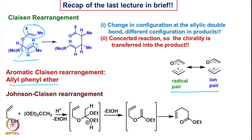Towards the end of the last class, we saw the Johnson Claisen rearrangement. If we take an allyl alcohol and react it with triethyl orthoacetate under acidic conditions and heat it, we get an intermediate that has all the elements of the Claisen rearrangement except for an extra O-ethyl group. This allows the reaction to form a gamma,delta-unsaturated ester. So, starting with allyl alcohol and performing Johnson Claisen rearrangement gives the gamma,delta-unsaturated ester, and we took examples of its application in organic synthesis.